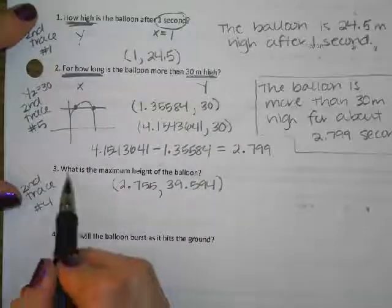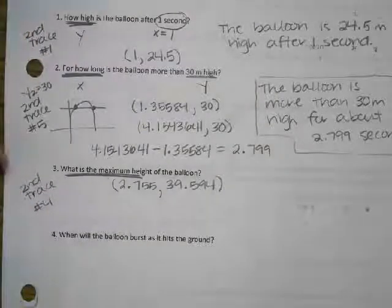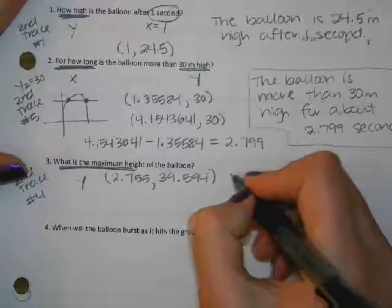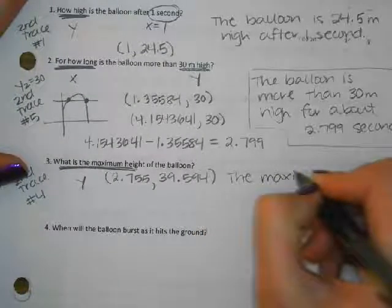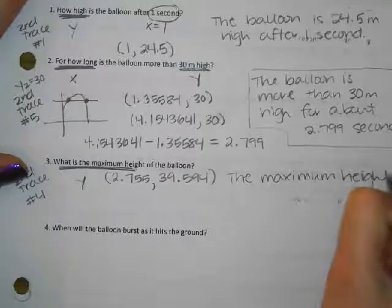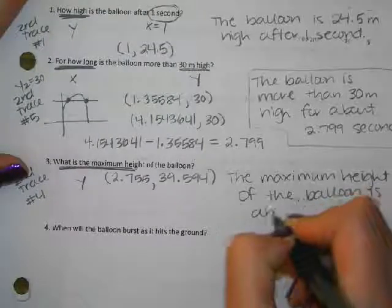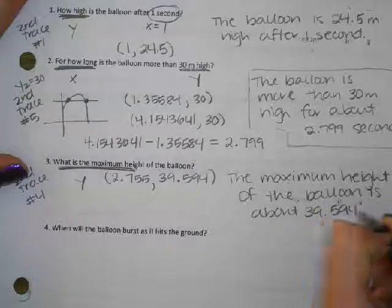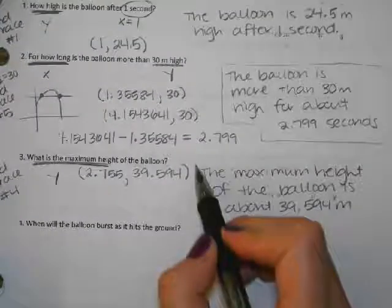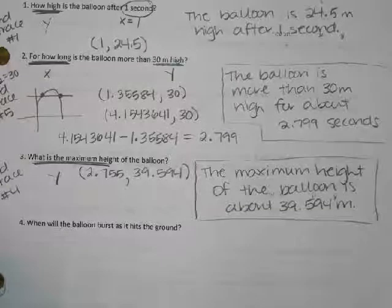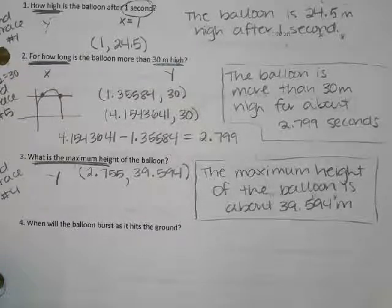The question asked for maximum height, so we want the y coordinate because y represents height. The maximum height of the balloon is about 39.594 meters. It's approximate because we rounded, and the model doesn't account for wind resistance or other real-world factors.